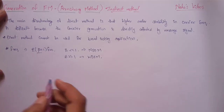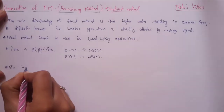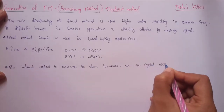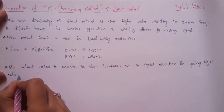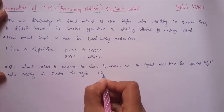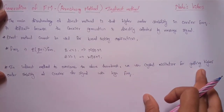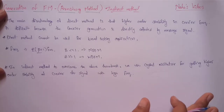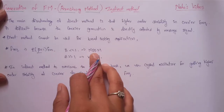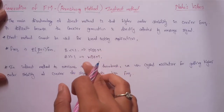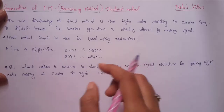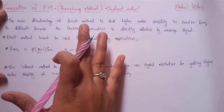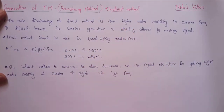In the indirect method, we use a crystal oscillator for getting higher-order stability of the carrier signal with high frequency. The basic principle is to generate the narrow band frequency, which is then converted into wide band frequency using frequency multipliers. We can use as many frequency multipliers as we want. That is the basic principle of the Armstrong or indirect method. Now let's look at the block diagram.